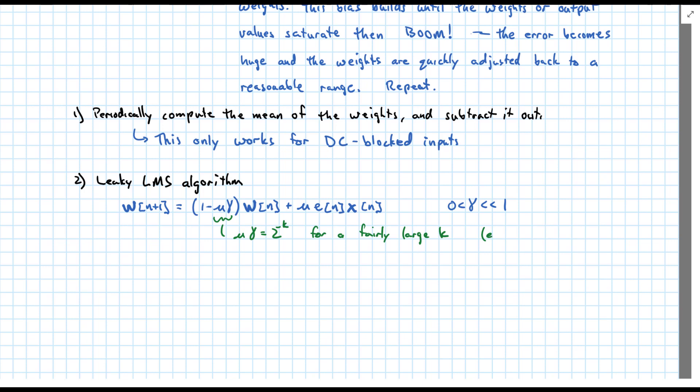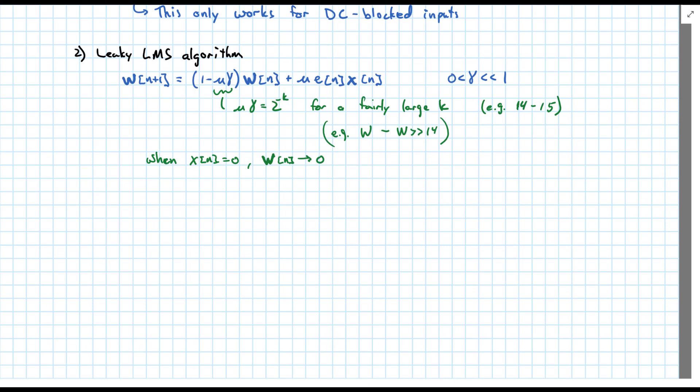So if we're dealing with fixed point arithmetic, integer math, for example, k may be 14 or 15. And so if you now have 16-bit arithmetic, we're essentially removing the LSB or some of the LSBs from our mu each time. And so this would be implemented as w plus w minus w right shifted 14 times. So it's very easy to implement in a computer where this multiplication is just handled by a shift. If x of n is equal to zero, w n goes to zero. You have to have an input for this to keep going.